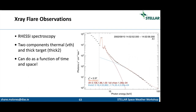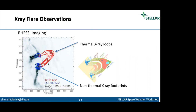RHESSI can also make images. Here's an observation with a TRACE 1600 angstrom background image showing flare ribbons in the photosphere, overlaid with RHESSI contours: thermal emission at 12-15 keV and non-thermal emission at 250-500 keV. If you have the standard flare model cartoon in mind, you can see this maps really well onto this emission. The hard X-ray and soft X-ray picture really does match up with the observations.